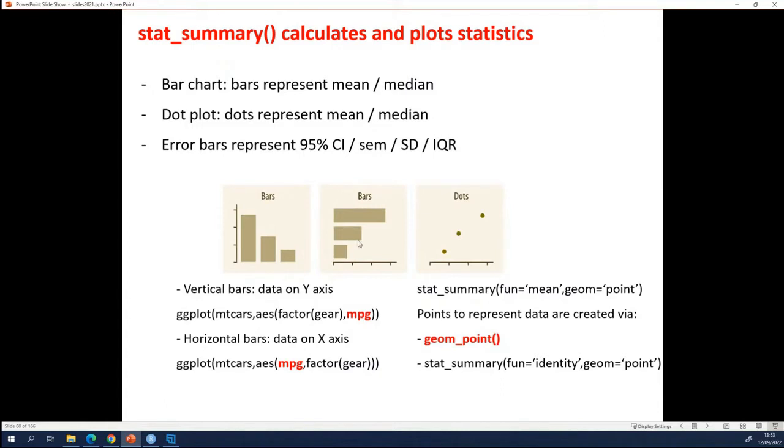For horizontal bars, you just switch these two. You put the thing that you measured on the x-axis and you put the thing that defines the groups in your data on the y-axis. And then automatically, you will make a horizontal bar chart.